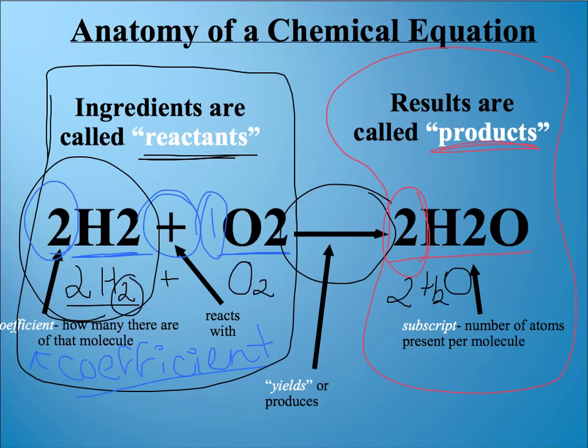And see how that 2 is littler? We call that a subscript. It's smaller, and it's kind of below where the line of the letter is. So this one's a subscript, also this O2, and over here on H2O the little 2 on the H is a subscript.